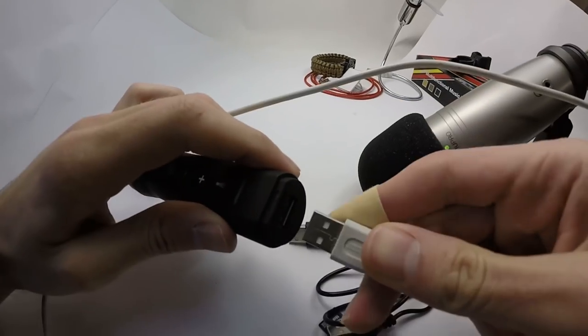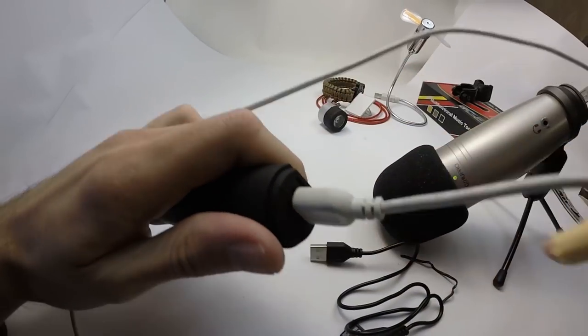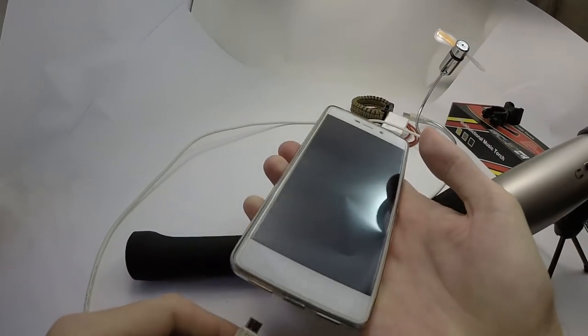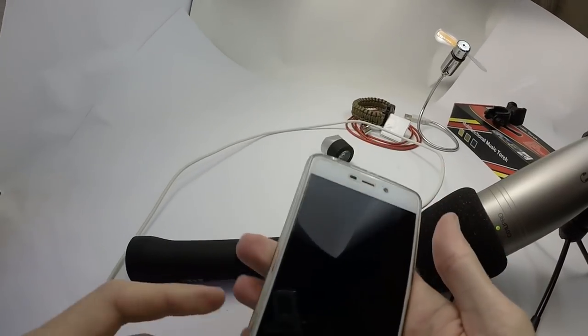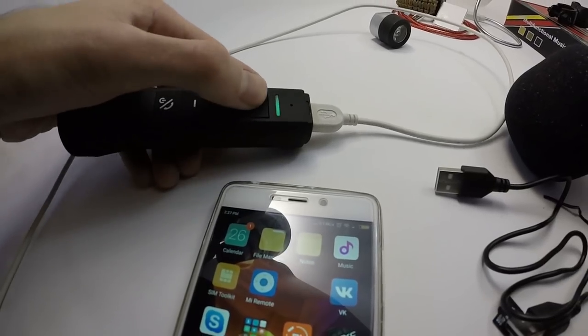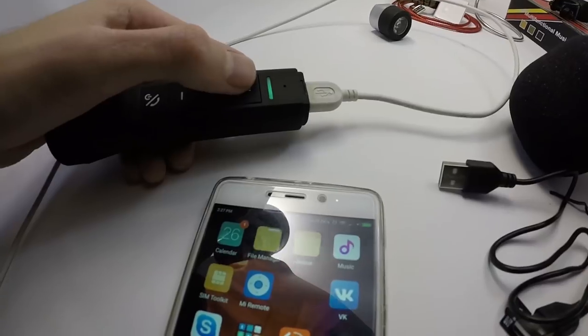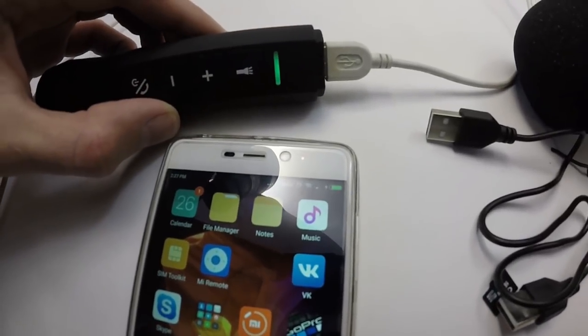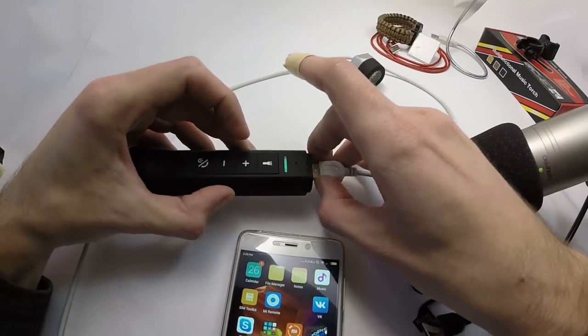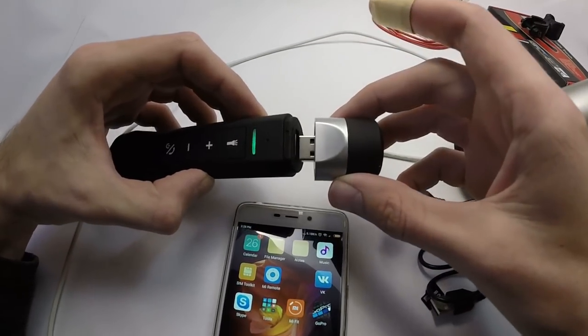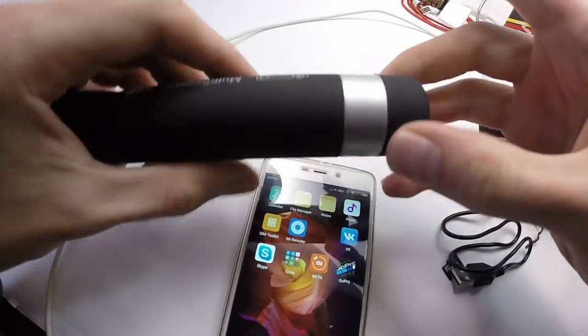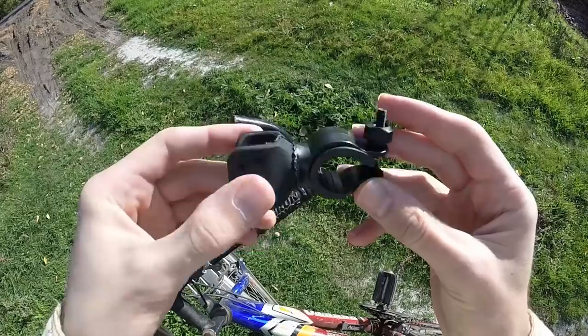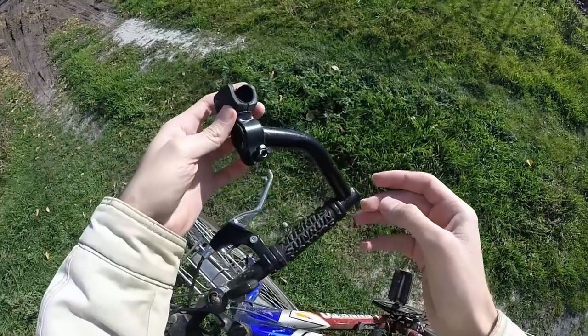Also you can use this torch as a power bank. You just plug in a micro USB cable, then connect it to the phone and turn on the torch. Then you just assemble it back just like in the video. Now let's do a test drive. At first you need to fix the mount onto the handlebar of your bicycle, just like in the video.